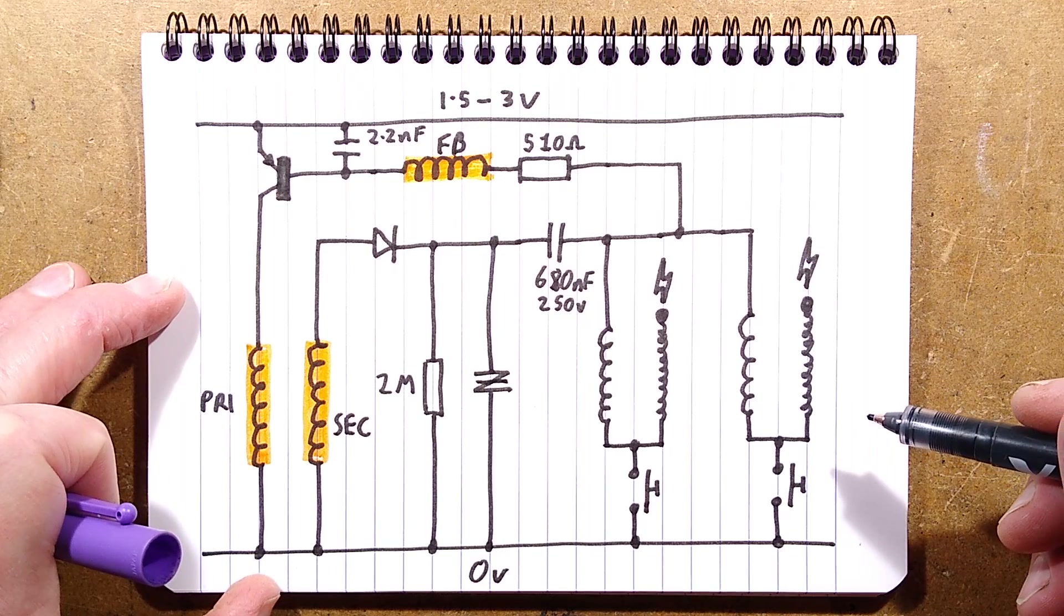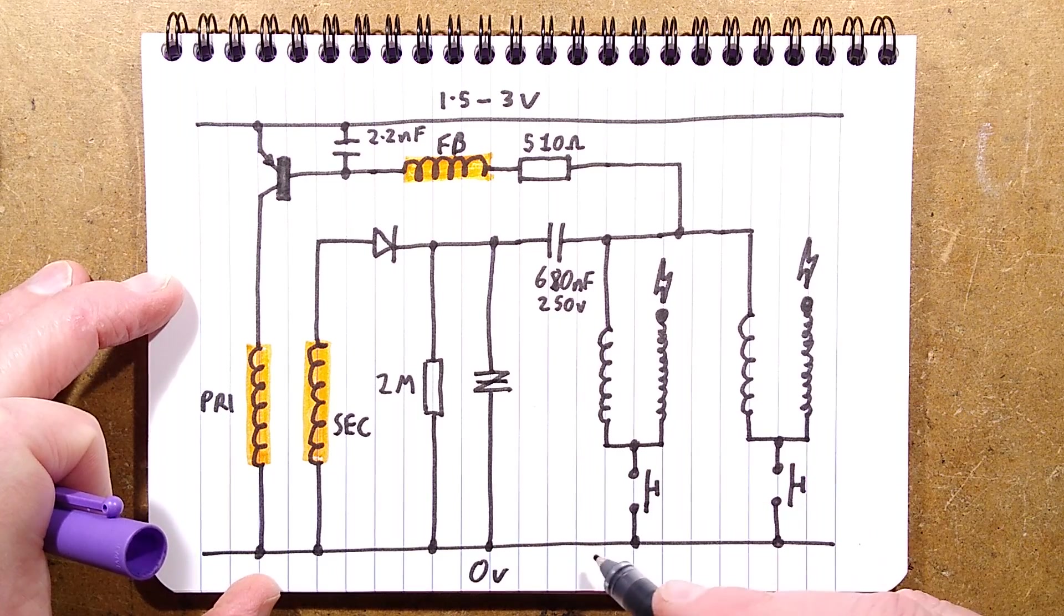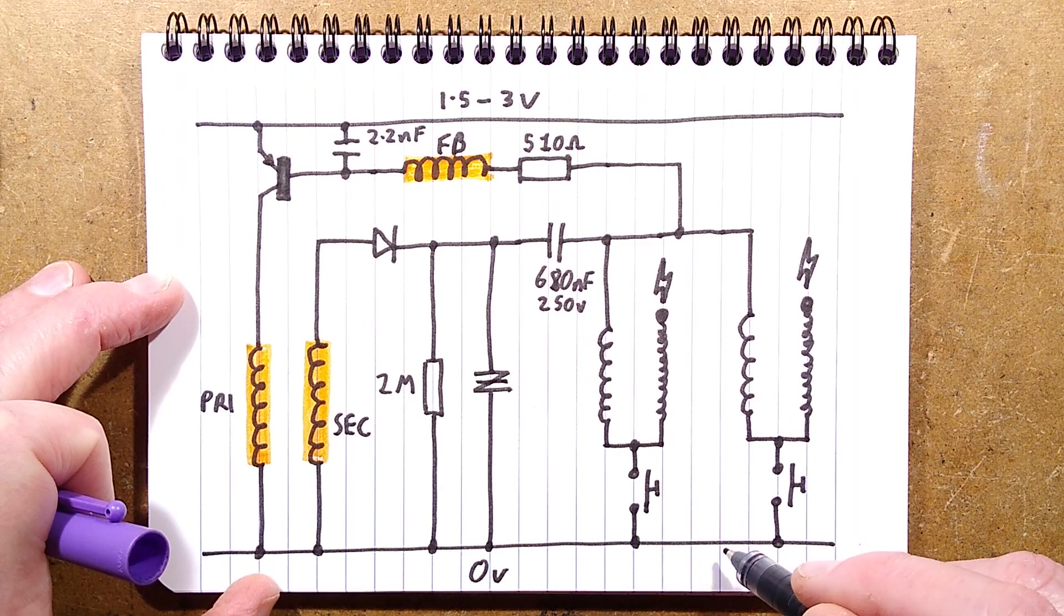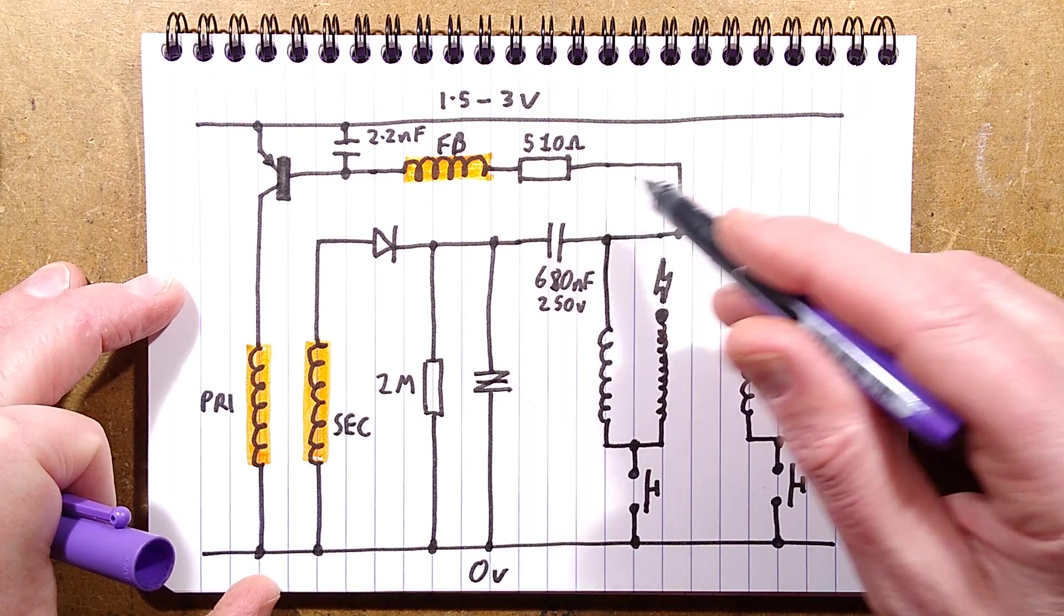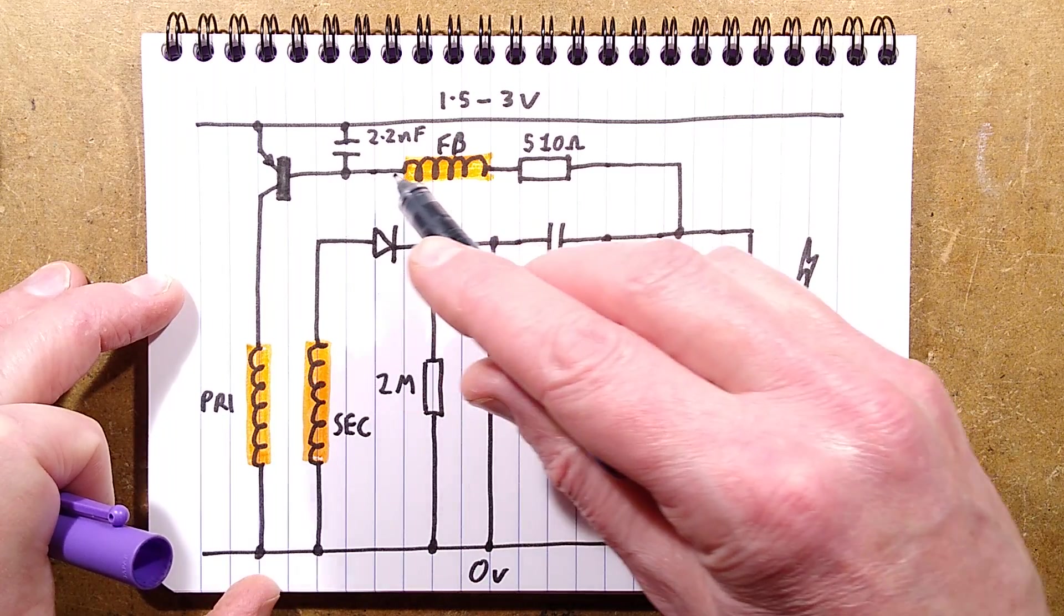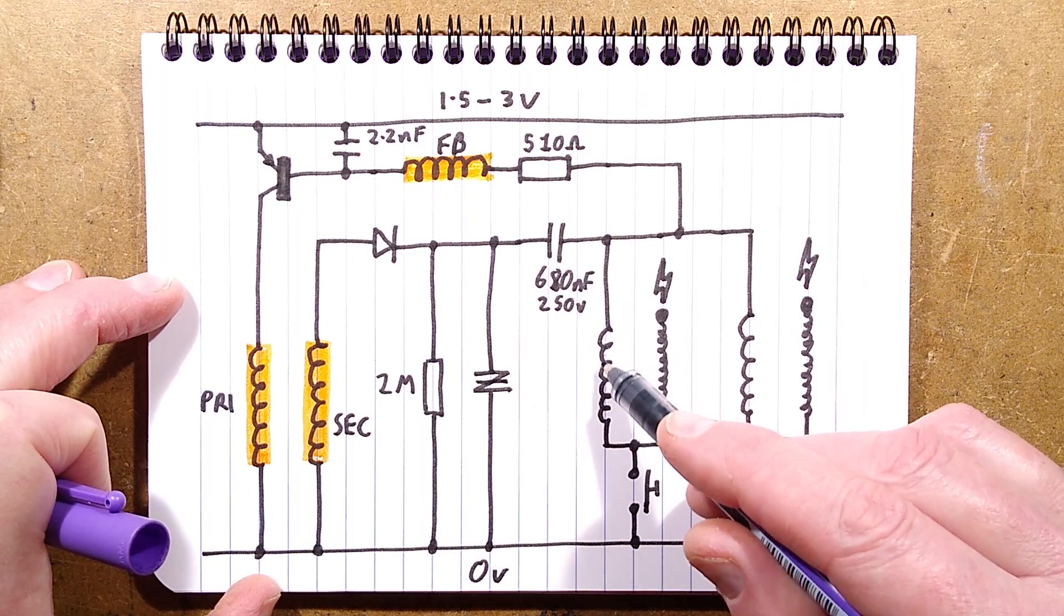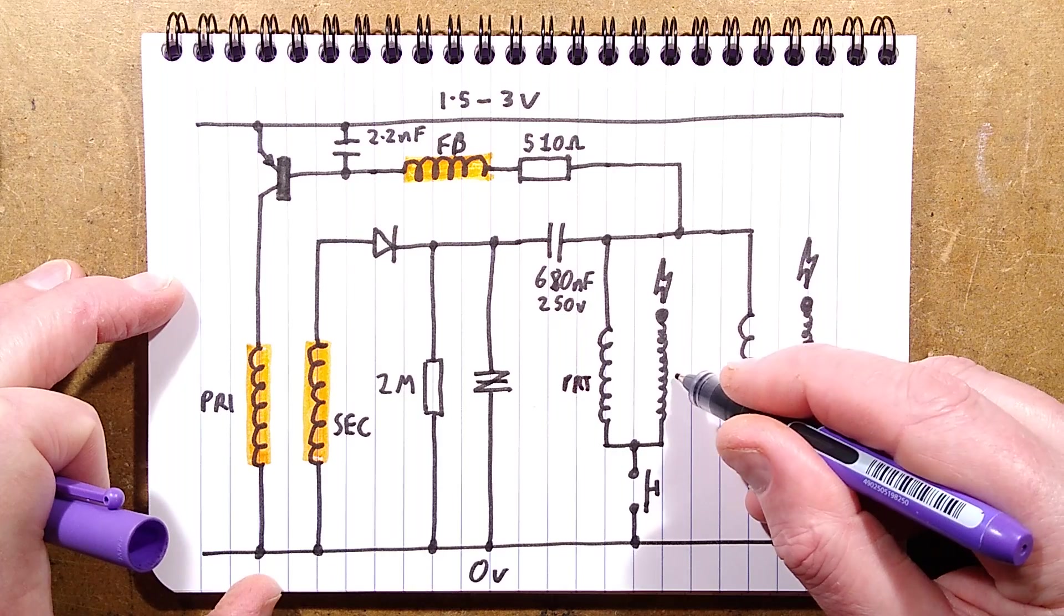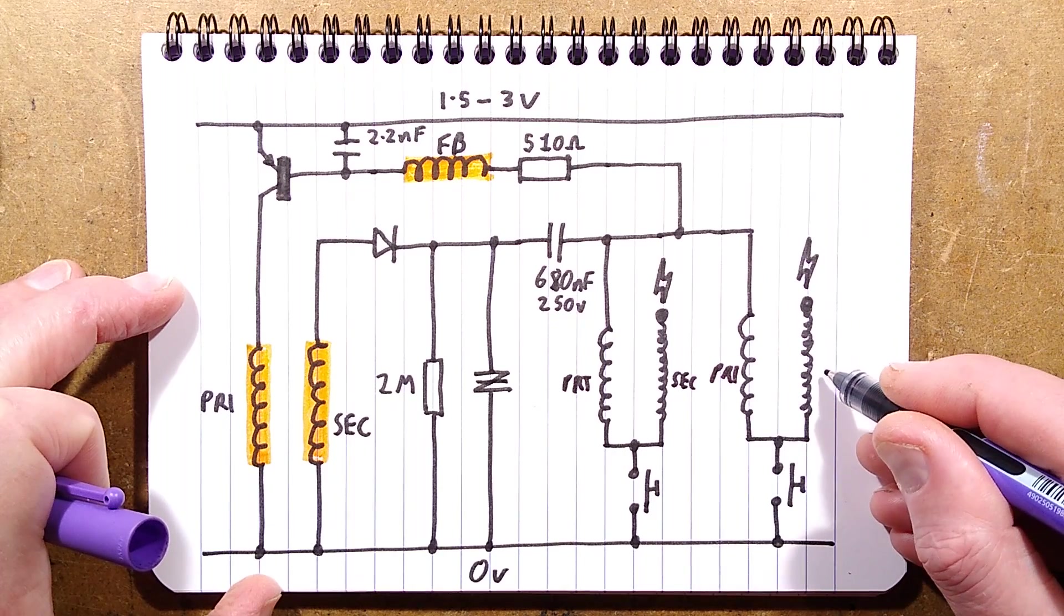So the operation of the circuit is this. When you press one of the buttons on the unit that bridges the green or yellow to the black terminal, which is connected to the chassis, which is also the spark return, it then completes the circuit. The feedback circuit can then actually find a path through the primary and secondary of the two high voltage transformers.